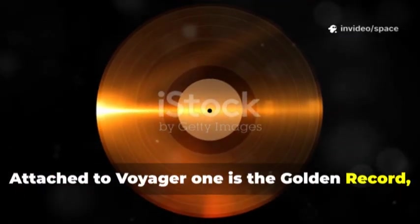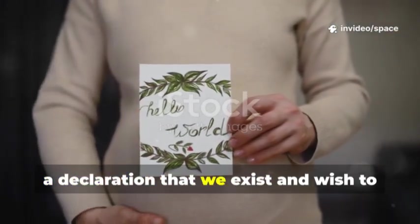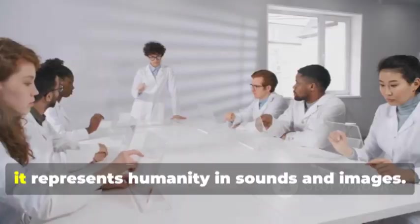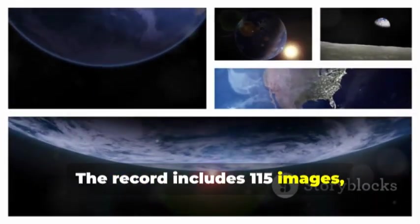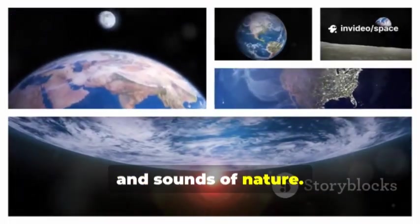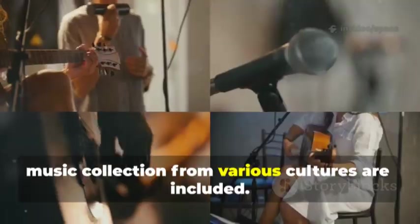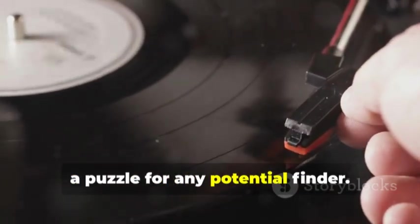Attached to Voyager 1 is the golden record, a time capsule for the cosmos. It's a greeting card, a declaration that we exist and wish to be known. Chosen by a committee led by Carl Sagan, it represents humanity in sounds and images. The record includes 115 images from DNA to a family photo and sounds of nature. Greetings in 55 languages and a 90-minute music collection from various cultures are included. The cover has instructions, a puzzle for any potential finder.